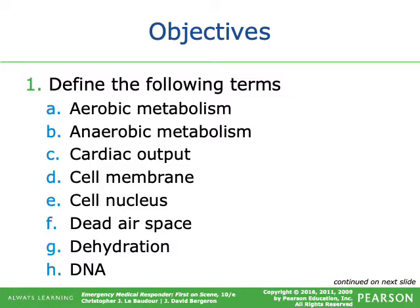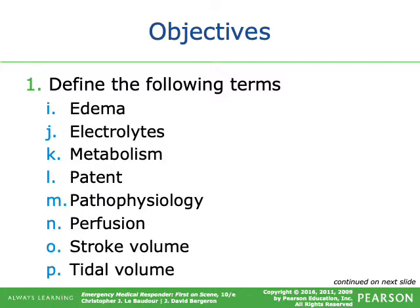The objectives for this chapter are to define the following terms: aerobic metabolism, anaerobic metabolism, cardiac output, cell membrane, cell nucleus, dead airspace, dehydration, DNA, edema, electrolytes, metabolism, the word patent — note that's not 'patient,' it's patent — pathophysiology, perfusion, stroke volume, and tidal volume.